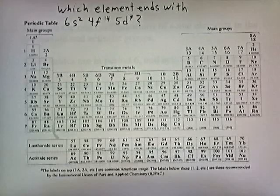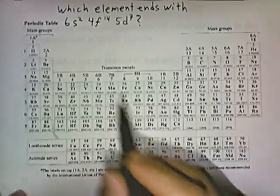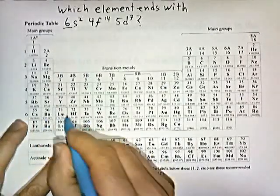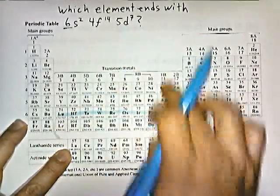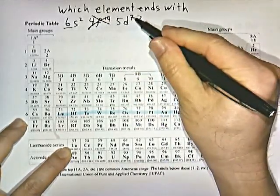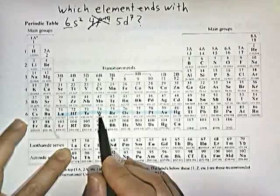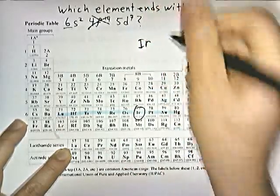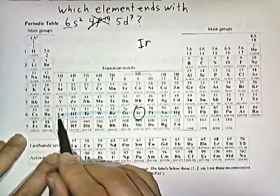Which element ends with 6s2, 4f14, 5d7? Since it ends in d, it's a transition element in period 6. We count 7 elements in the sixth row of the transition zone: 1, 2, 3, 4, 5, 6, 7 — that's iridium. We only count elements that are in the transition area.